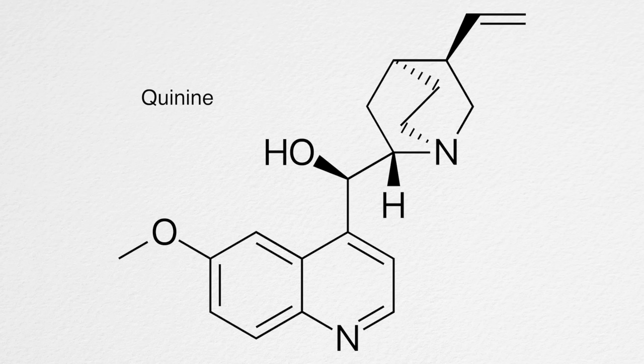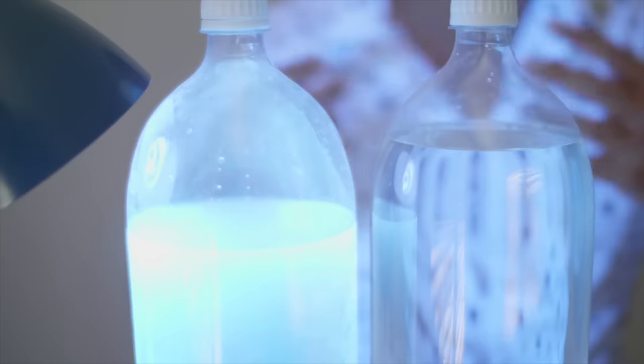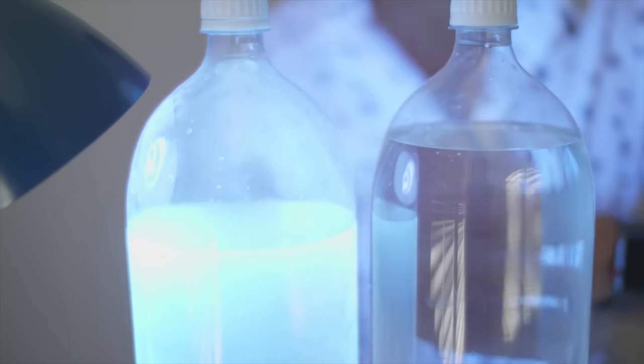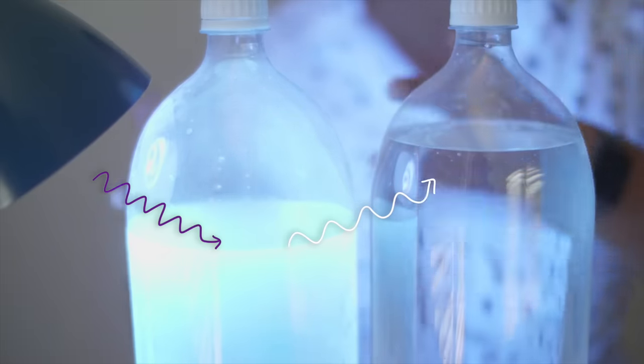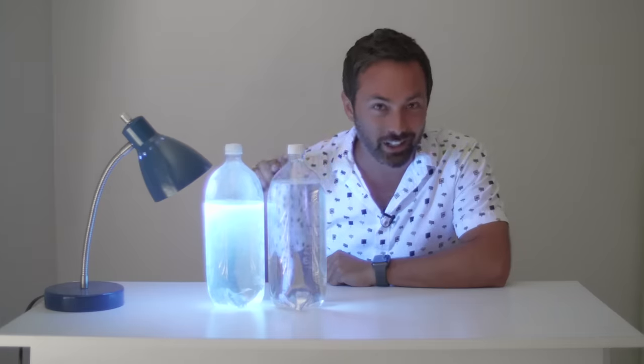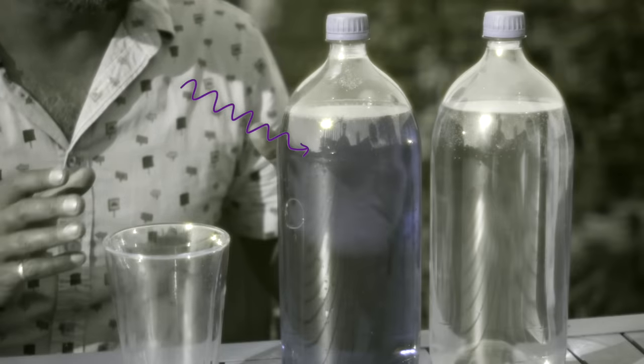Tonic water contains the quinine molecule, which was originally a preventative medicine against malaria. But it tasted so bitter that people mixed it with sugar water and made a tonic. The thing about the quinine molecule is that it fluoresces — meaning that it absorbs ultraviolet light and re-radiates it as visible light. And that's why in here it looks like it's glowing. But outside, where we're looking at it in the ultraviolet, it looks dark because it is absorbing that ultraviolet energy.